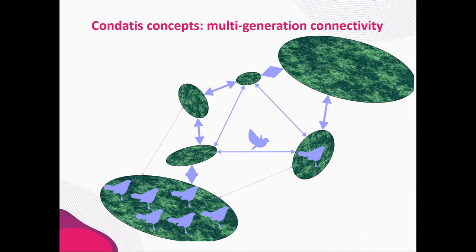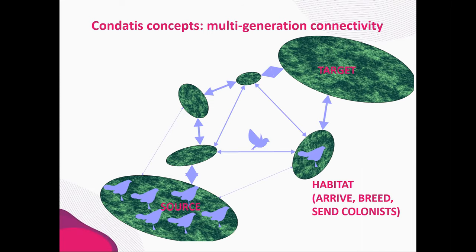The main reason Condatus differs from other connectivity models is its conception of connectivity, which is about multi-generation connectivity — thinking of an entire population or species that needs to cross the landscape. We're talking about long timescales where each movement ends with a breeding event and the next movement is made by offspring from those colonisers. The place the species starts out is called the source, and the place it needs to get to is called the target. In between, there are patches of habitat where the species can arrive, breed, and send out more colonists to potentially reach other patches — giving that multi-generation connectivity.